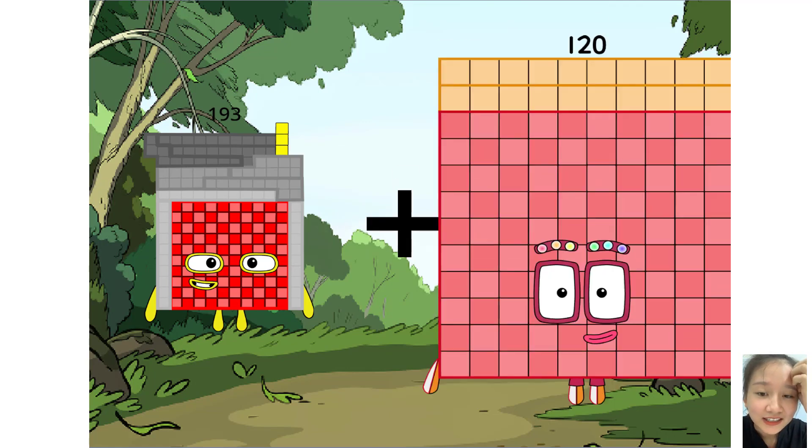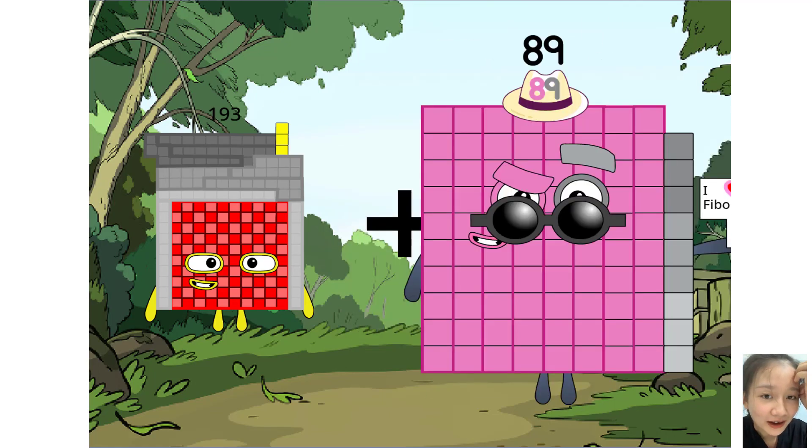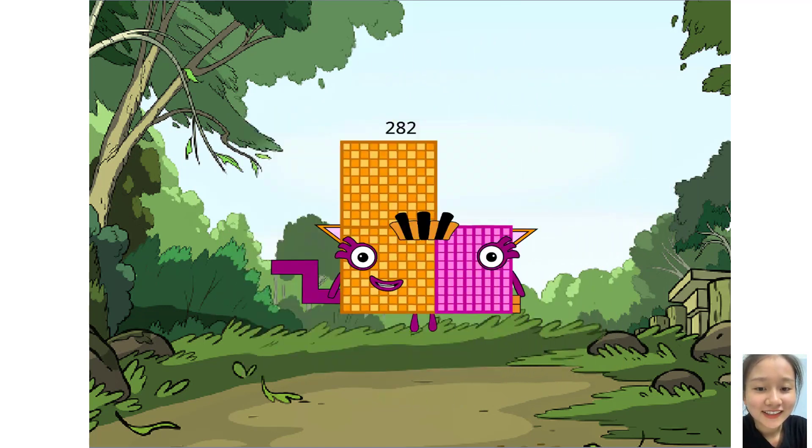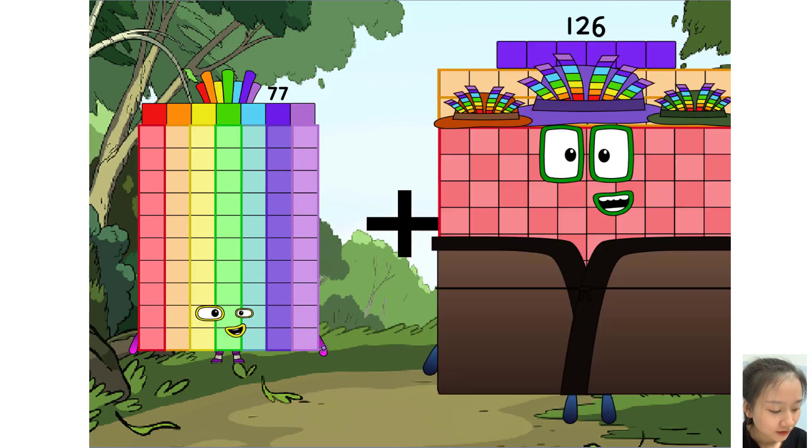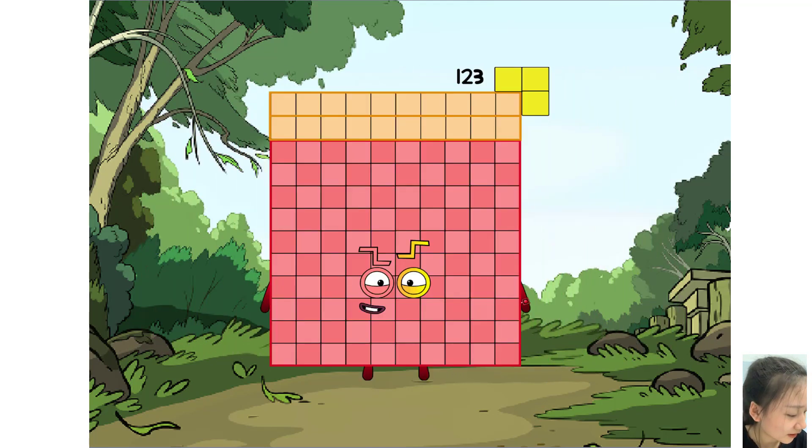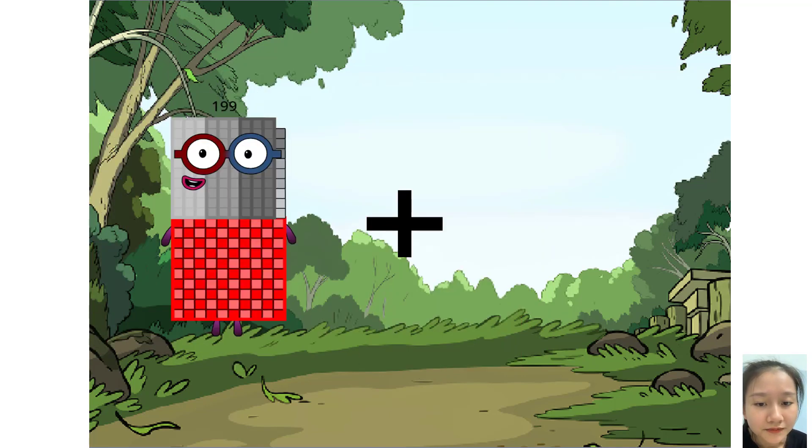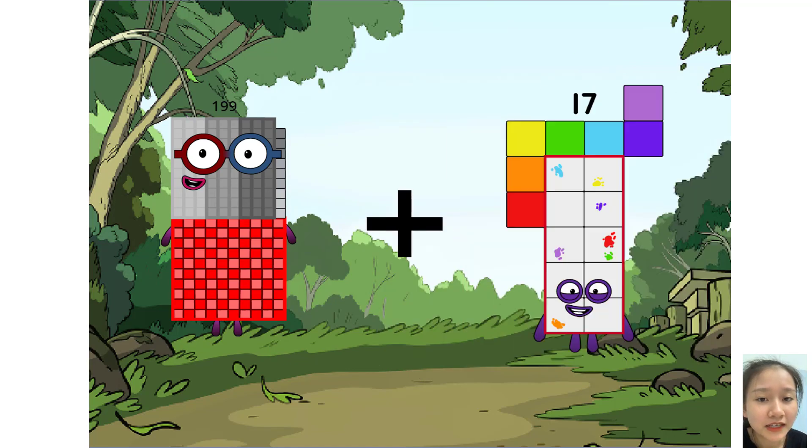193 plus 89 equals 282. Oh, next question. 90 plus 89, this write. 199 plus 79, oh, 2157 plus 99.